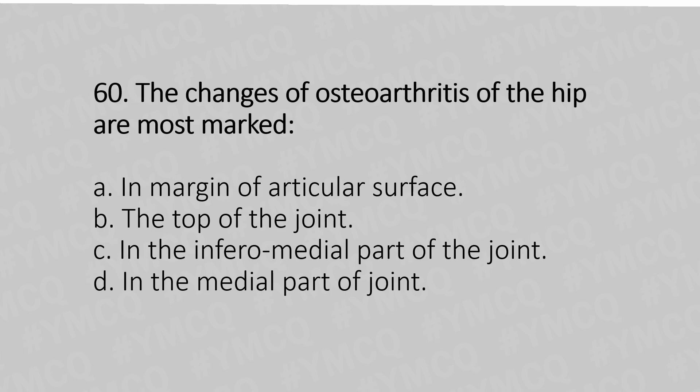Now let's move to question number 60. The changes of osteoarthritis of the hip are most marked: option A, at the margin of the articular surface; option B, at the top of the joint; option C, at the inferior medial aspect of the joint; option D, in the middle aspect of the joint. And the answer is option B, the top of the joint.